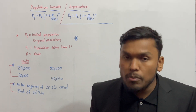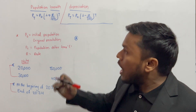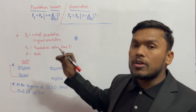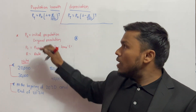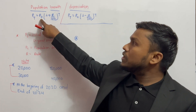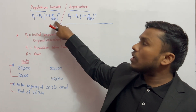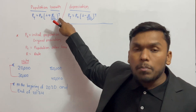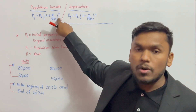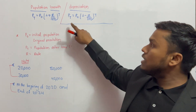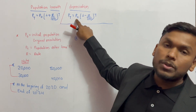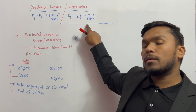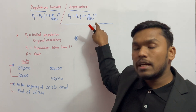If you can understand depreciation, you can see the formula: Pt equals P0 times (1 plus r upon 100) to the power t for growth. And Pt equals P0 times (1 minus r upon 100) to the power t for depreciation.